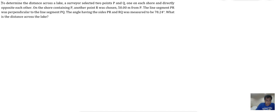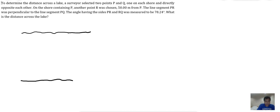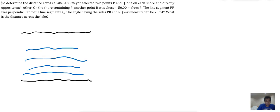To understand the problem, we need to draw an illustration. There is a lake — this is one shore, and this is the other shore. So there are two opposite shores. Let's color the lake blue.